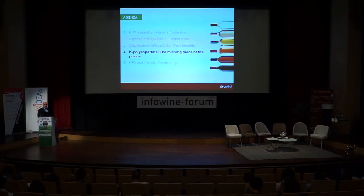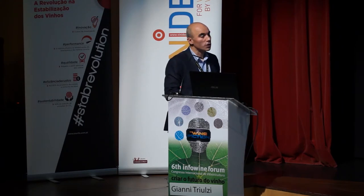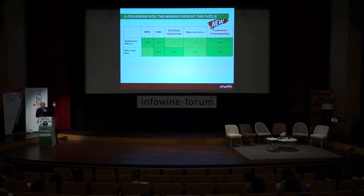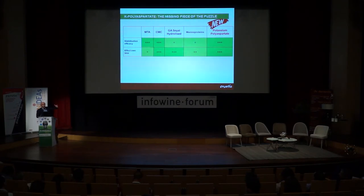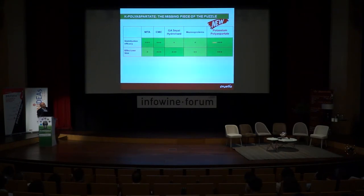Now I will jump to the subject of potassium polyaspartate. Finally, we have it. Why do we consider this compound so attractive? Why is this new molecule an important tool for all producers? What we request from stabilizing products is to be effective and efficient, and to maintain the effect during time. Here you can see the comparison between metatartaric acid, carboxymethylcellulose, hydrolyzed gum arabic, mannoproteins, and the new compound potassium polyaspartate. Considering efficacy and effectiveness, potassium polyaspartate is comparable to CMC and metatartaric acid — we'll see later it's a bit more efficient than CMC.